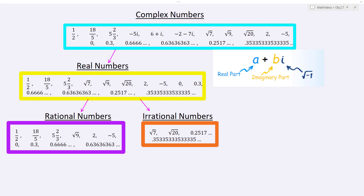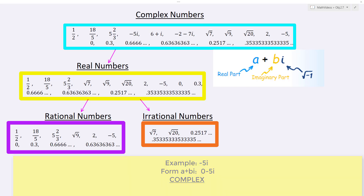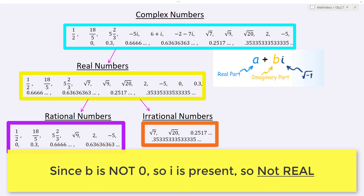Now let's look at one final example: negative 5i. Negative 5i is complex — it has an A value of 0 and a B value of negative 5. Since that B value is not 0, you're definitely not real, and if you're not real, you're definitely not rational or irrational. So negative 5i is only complex.